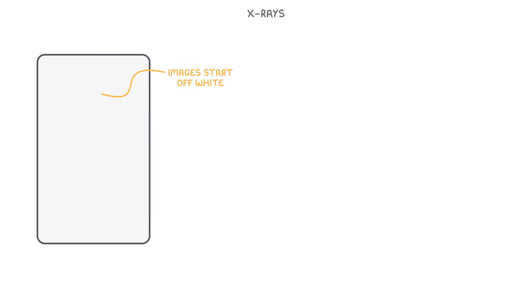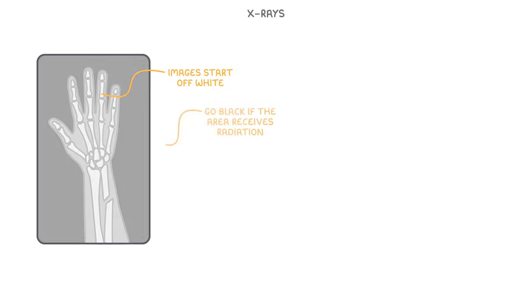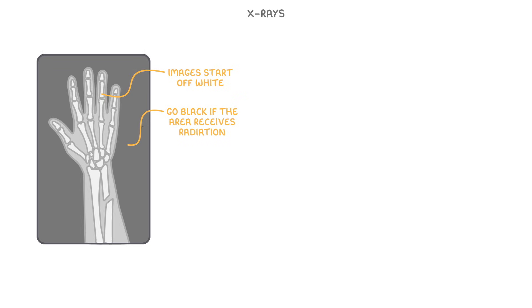One of the odd things with X-ray images, though, is that the images start off completely white, and only go black if that area of the detector plate receives radiation. So it's actually the dense areas, like bone, that appear white, while pretty much everything else is either black or a shade of grey.